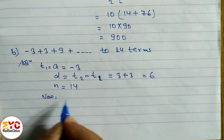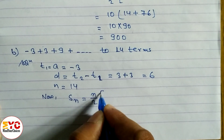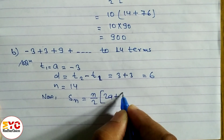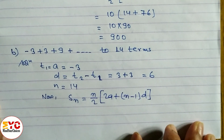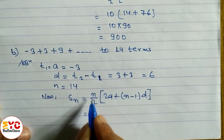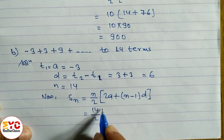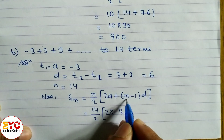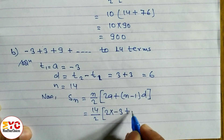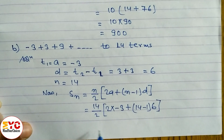Now we use the sum formula S_n = n/2 × (2a + (n−1)d). Substituting: n = 14, so 14/2; a = −3, so 2 × (−3); n−1 = 13; d = 6.